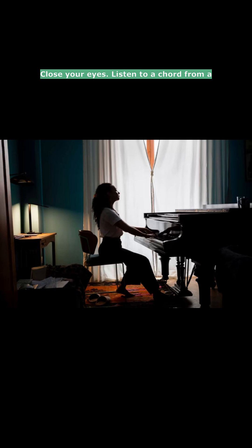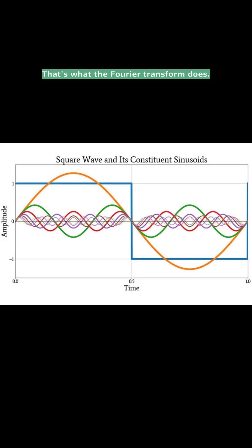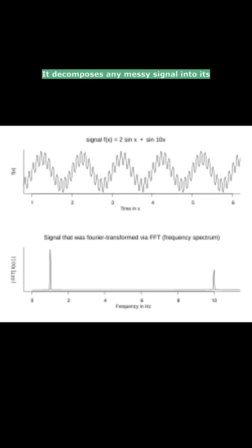Close your eyes. Listen to a chord from a piano. Your ear effortlessly teases apart the individual notes. That's what the Fourier transform does — it decomposes any messy signal into its pure underlying frequencies.